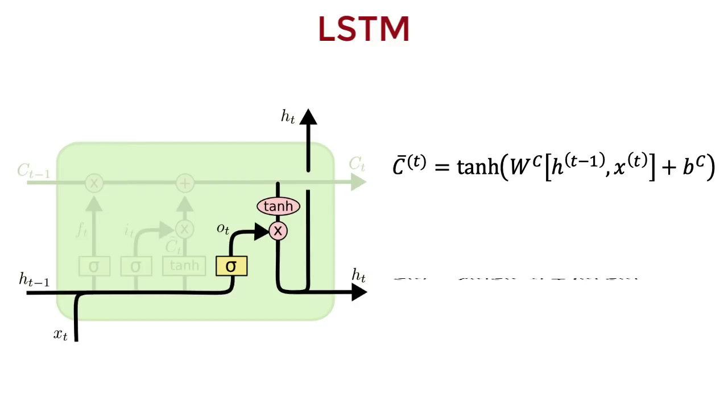C bar represents the new candidate values that can be applied to the cell state. Now we can apply the gates. Like I said before, the input gate controls whether the memory cell is updated, so it's applied to C bar, which is the only vector that can modify the cell state.